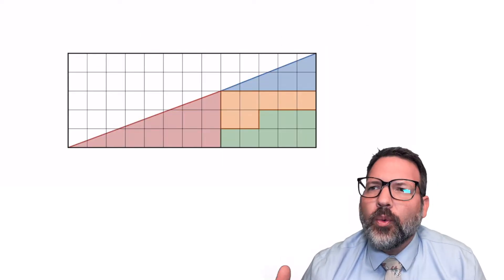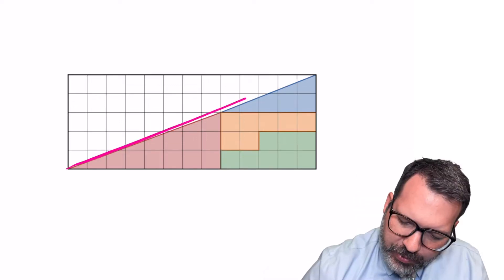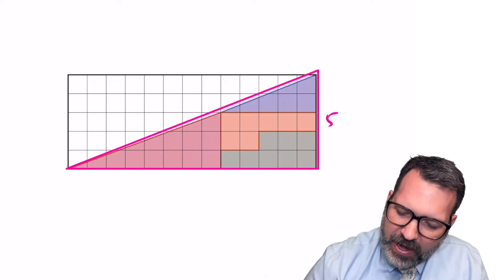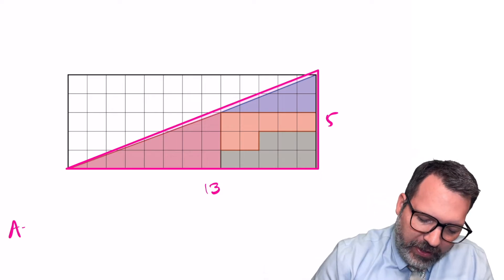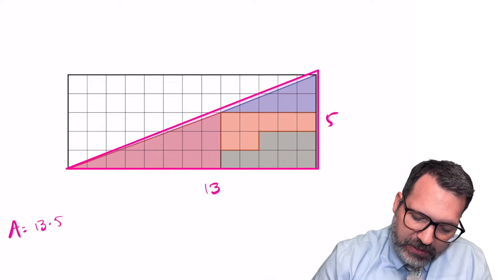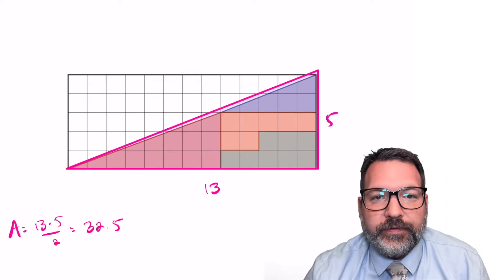Whenever you're dealing with a puzzle like this, you want to ask yourself, what are my assumptions, and how might those assumptions be failing? In this particular case, I'm assuming that this is a 5 by 13 triangle, that it is genuinely a triangle, and if I wanted to, I could even figure out the area of that triangle. Base times height divided by 2 gives us an area of 32.5,